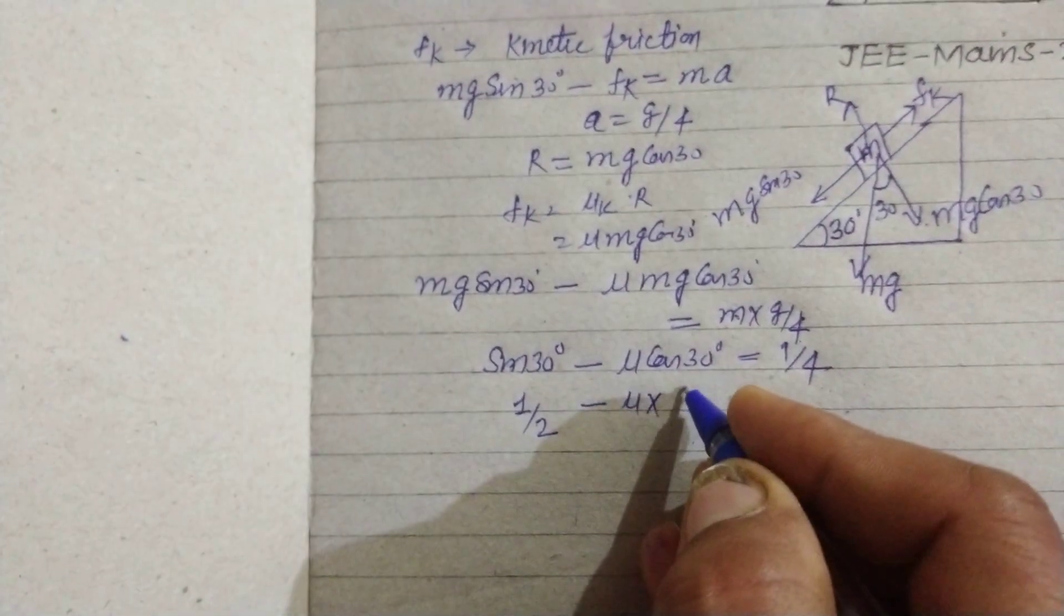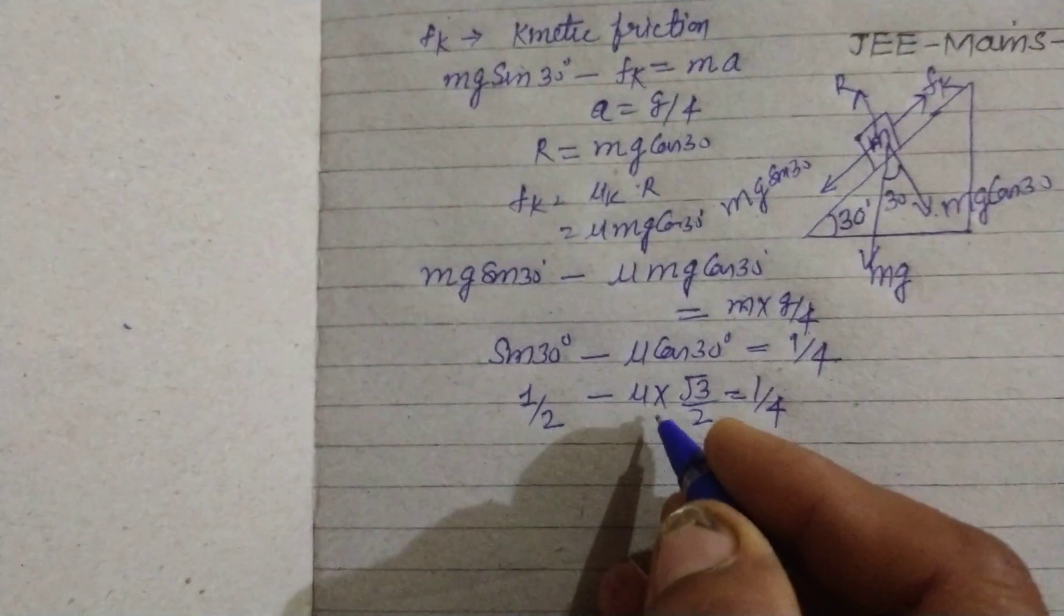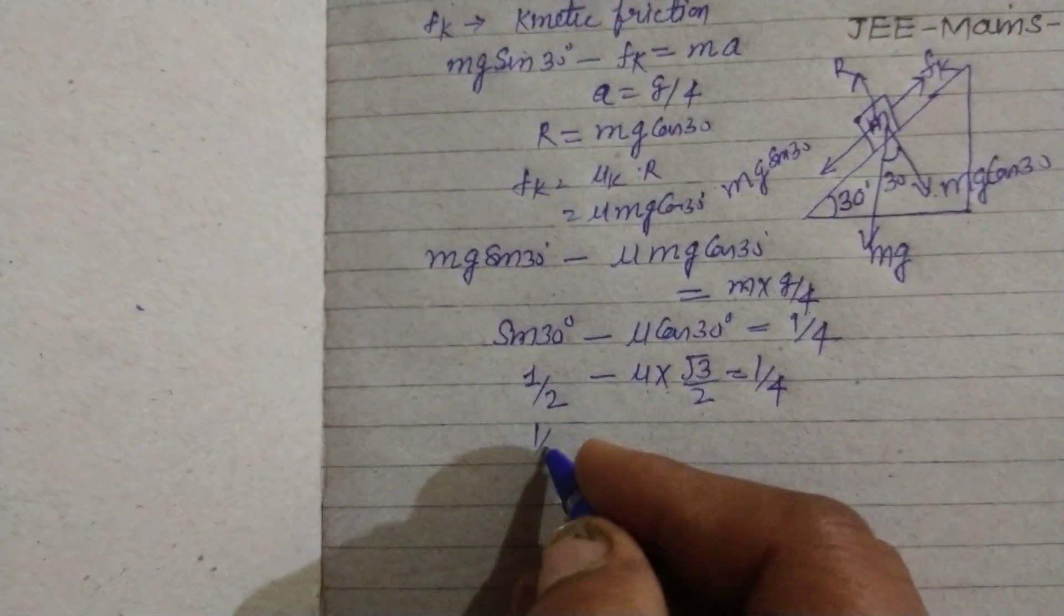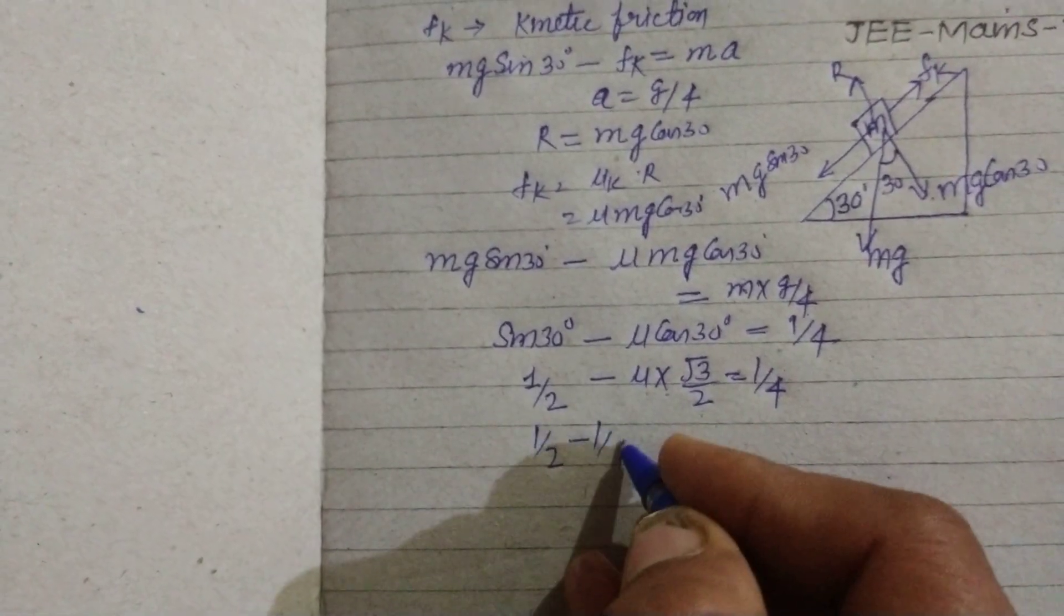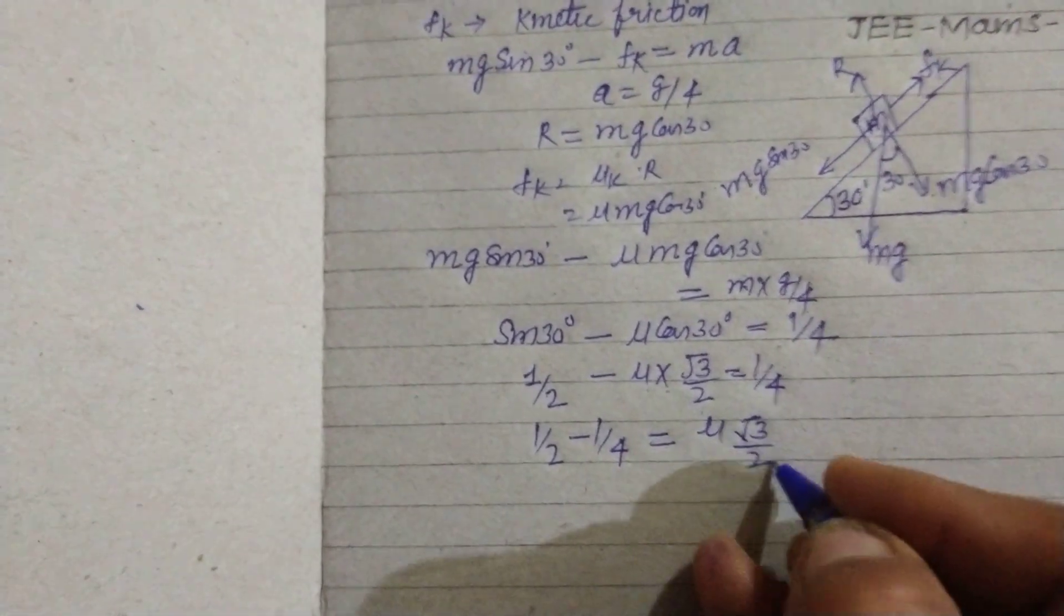μ cos 30° is μ root 3 by 2, and this is 1/4. So we bring this part towards right side and bring 1/4 towards left. So this is μ root 3 by 2.